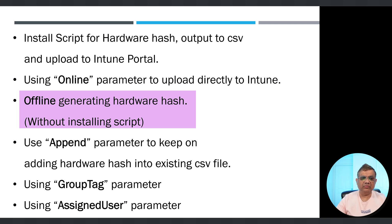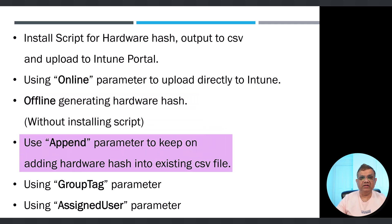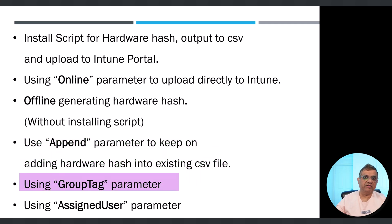Another option is the append parameter, which keeps adding the hardware hash from one device to another, so you manually switch between devices to keep adding hardware hash information into a single CSV file. Then I'll show the group tag parameter, where you're not only uploading the hardware hash but also capturing the group tag information, so you don't have to manually assign a device to a group tag for the Autopilot deployment profile.